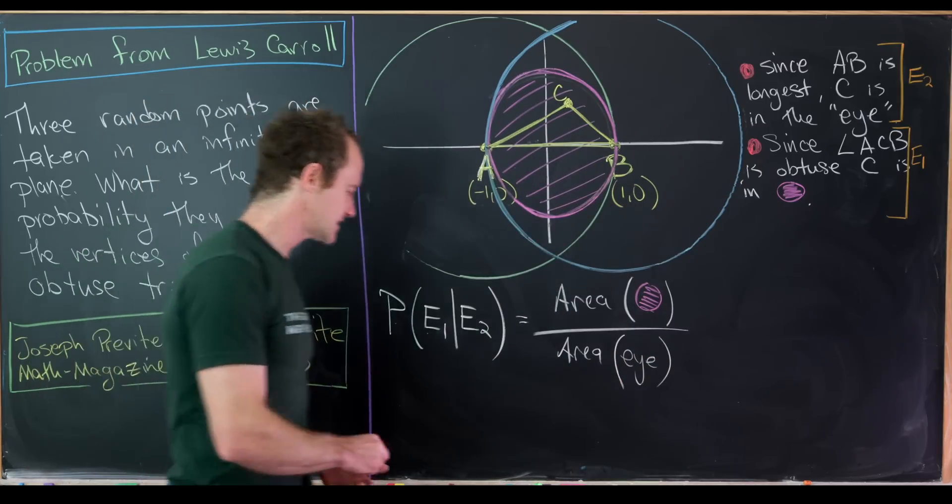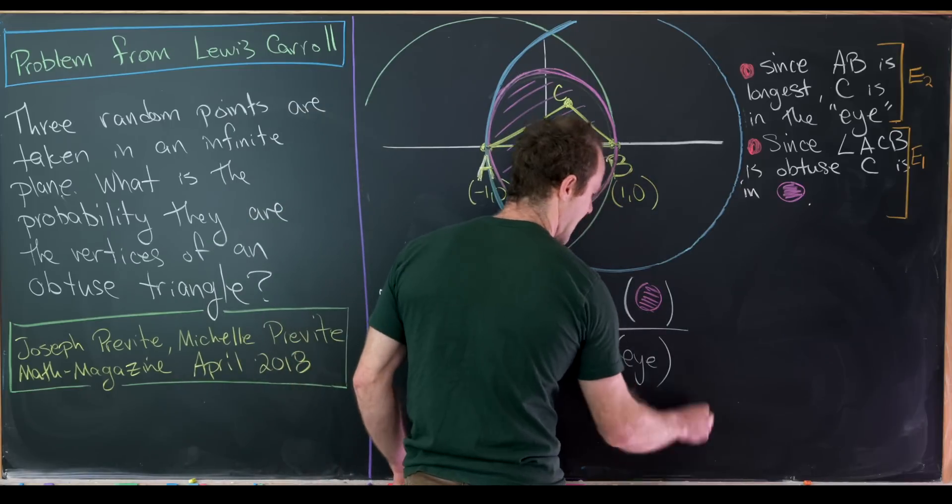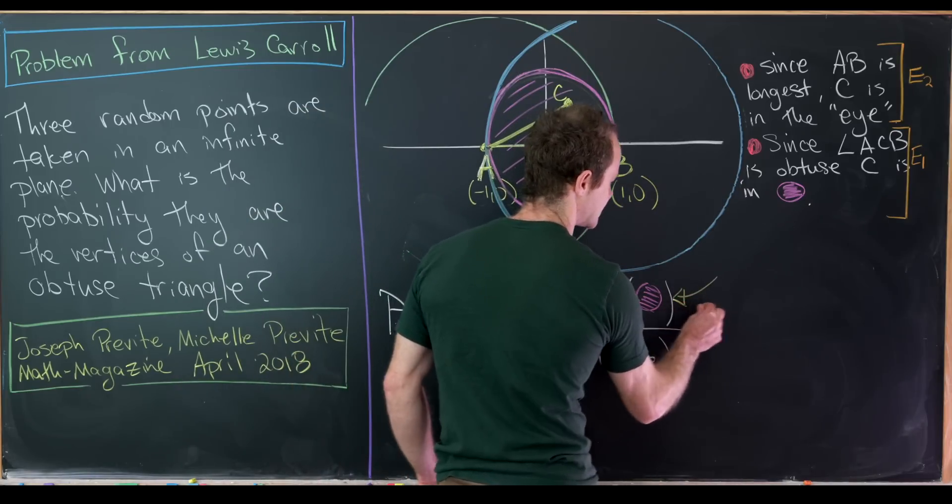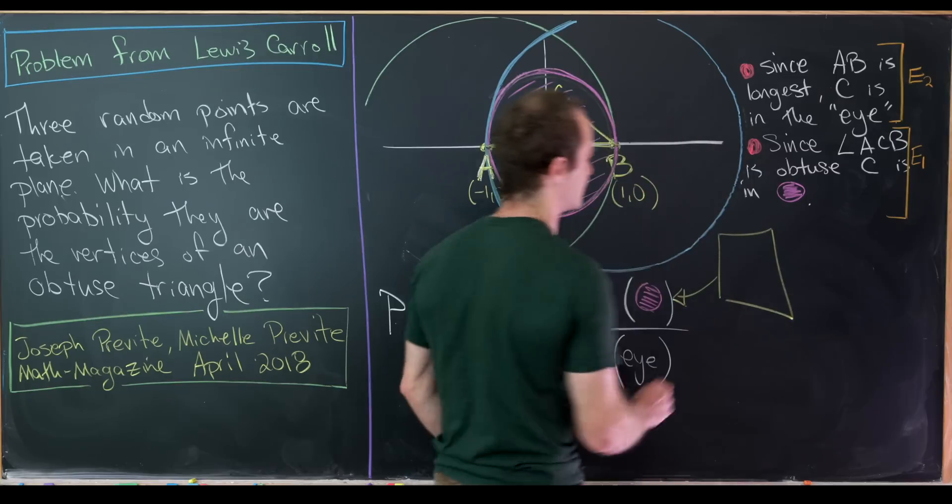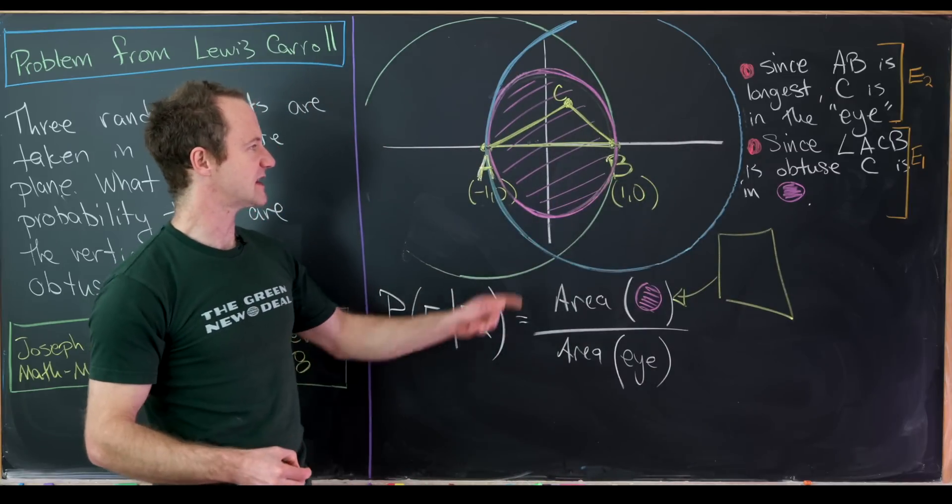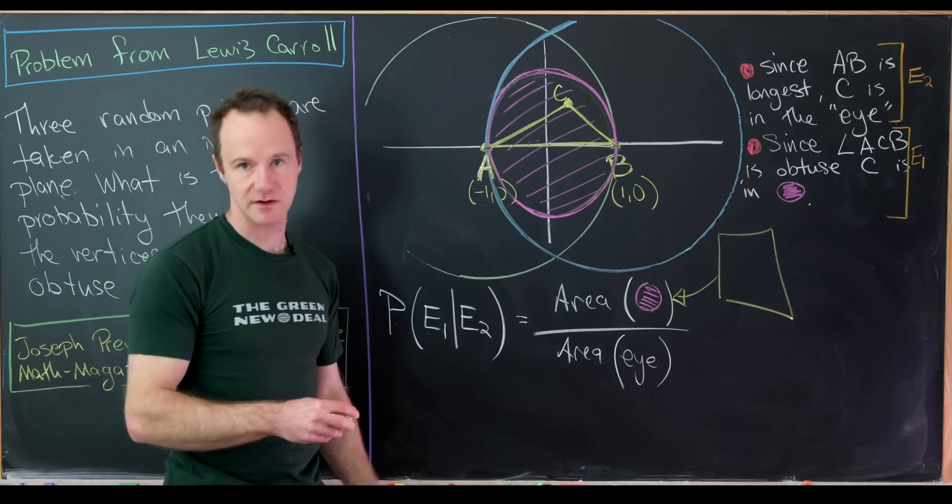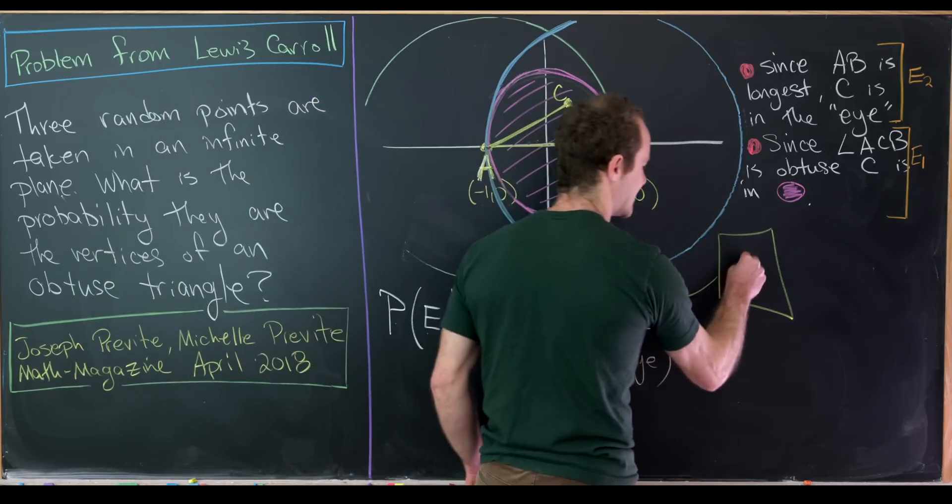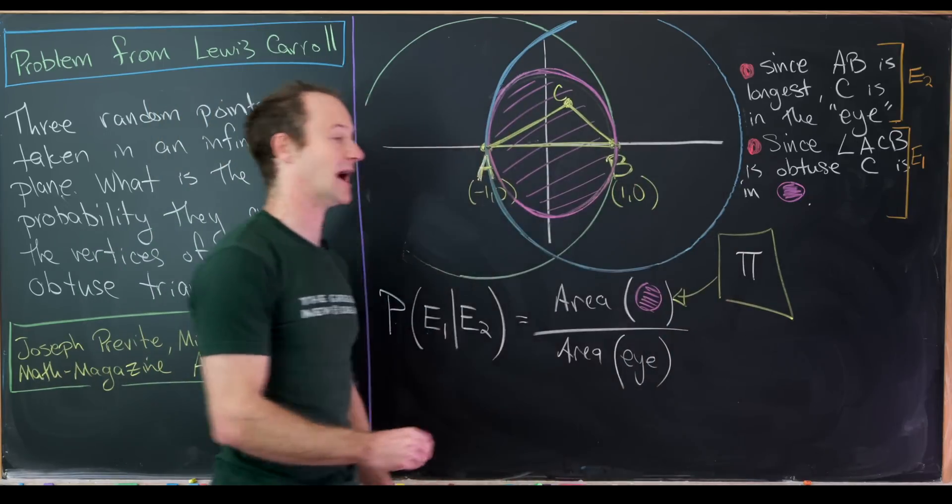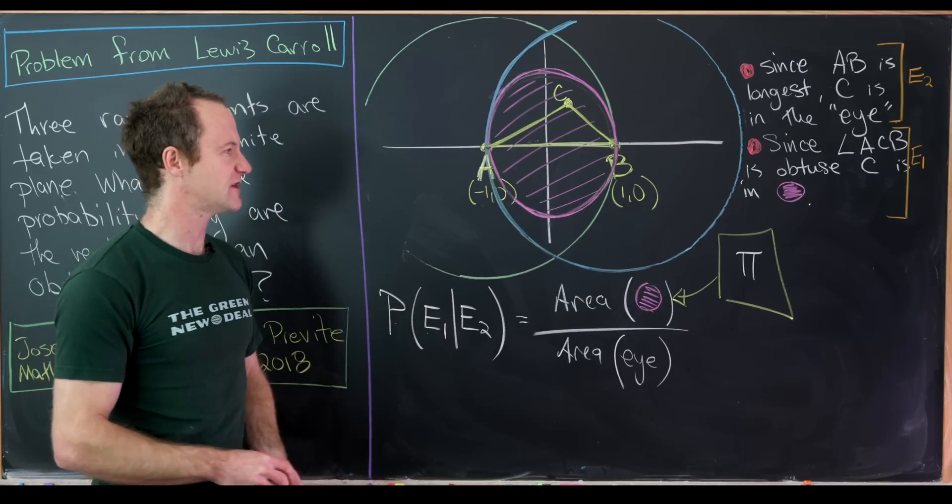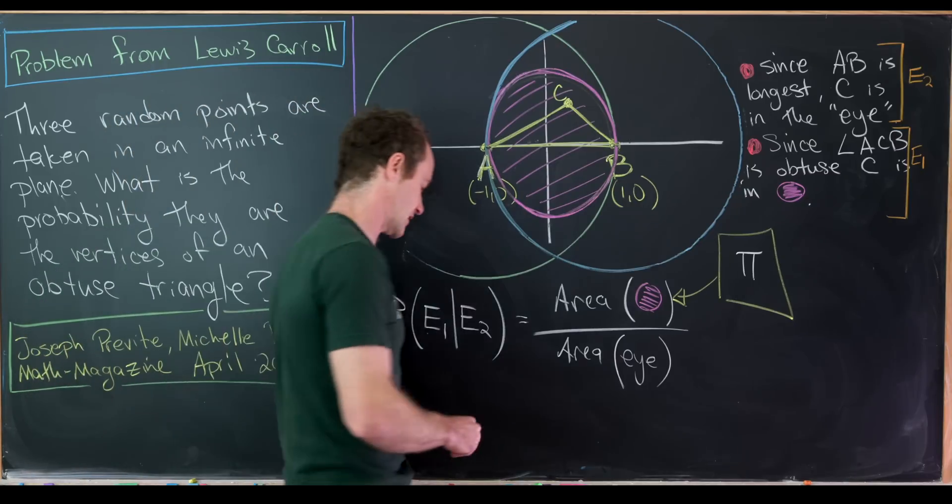So this will end up being the area of this magenta circle over the area of the I. Now let's immediately notice that the area of the magenta circle is fairly simple to calculate because that's a circle with radius 1. So by the standard formula for the area of a circle, that is simply the number pi.